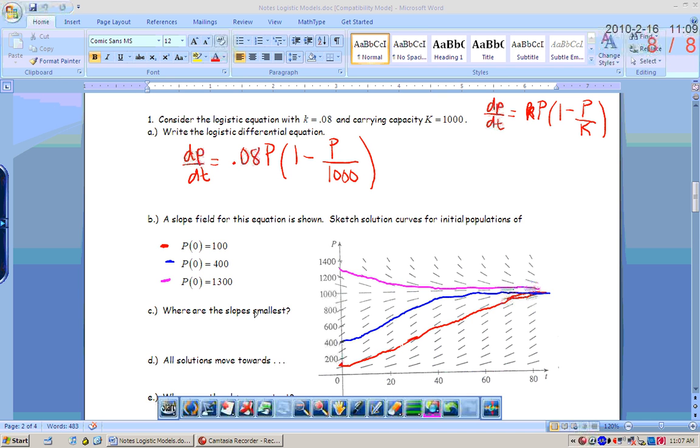Where are the slopes the smallest? Let's do it in terms of the p values, the population values, so the y values. Where are the slopes the smallest or least steep? Where p is getting really close to 1000, which is the carrying capacity. Because that makes sense, because your rate of change is going to be very, very small. There's another place where the slopes are pretty small.